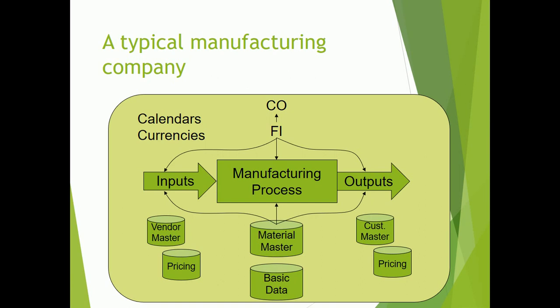As an example of a typical manufacturing company: they have a CO controlling module and FI for financials, which controls all the manufacturing processes. Inputs go into manufacturing processes connected to material master, pricing, vendor master, basic data, and customer master, and in the end it outputs reports and data. All these databases are connected and controlled by FI and CO.